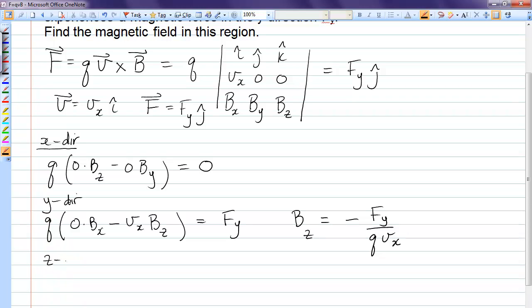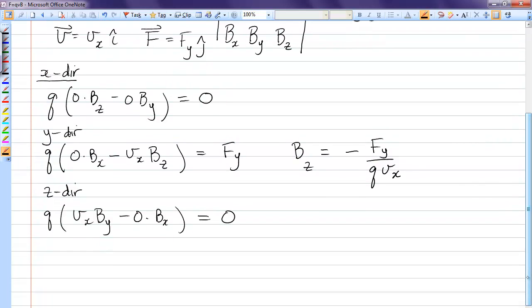Let's go to the z equation. We have Q times Vx By minus 0 times Bx has to be 0, because there is no force in the z direction. Bx can still be anything here, but now right away we can know By has to be 0, or else that equation will never work.